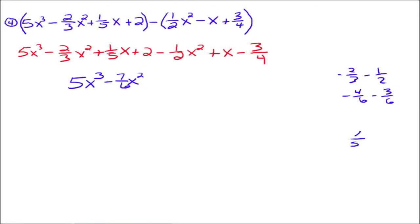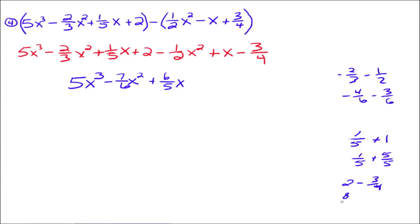We do the same thing with the 1 fifth x and the x. We do 1 fifth plus 1 — the common denominator is 5, so 5 over 5. That gives us 6 fifths, so plus 6 fifths x. And then we have 2 and minus 3 fourths for the constant terms, so that's 8 fourths minus 3 fourths, which is positive 5 fourths. So we have 5x cubed minus 7 sixths x squared plus 6 fifths x plus 5 fourths.